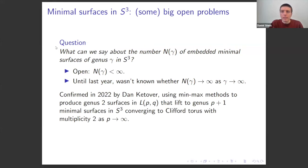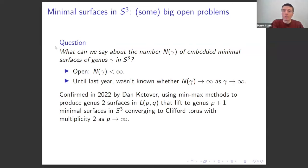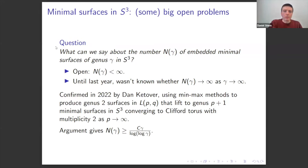Dan Ketover confirmed that the number does grow to infinity, using min-max methods to construct genus 2 minimal surfaces in lens spaces, then lifting them to S³ to get high genus examples converging to a Clifford torus with multiplicity 2. His argument gives something like an almost linear lower bound.